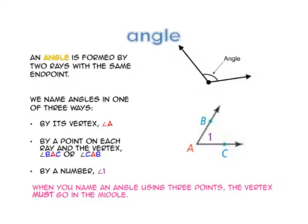An angle is formed by two rays with the same endpoint. We can name an angle in three ways. The first way is by its vertex letter — so here we would call this angle A. The second way is by a point on each ray and the vertex, so here we could call this angle BAC, or going backwards, angle CAB. The last way to name an angle is by a number, so this would be called angle 1.